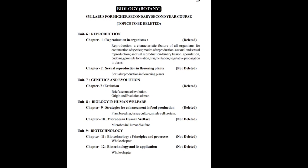Previously your syllabus had four units starting from units six, seven, eight and nine. First of all I am going to discuss with you about the botany part of your syllabus. Your first unit is Reproduction, and Chapter 1 is 'Reproduction in Organisms.' In this chapter, almost all the topics are deleted — only the sexual reproduction portion is still present.